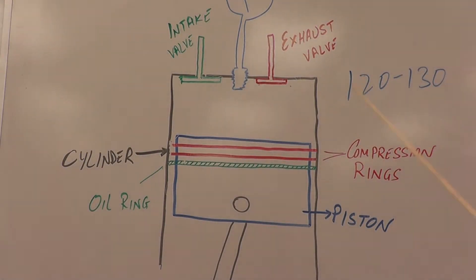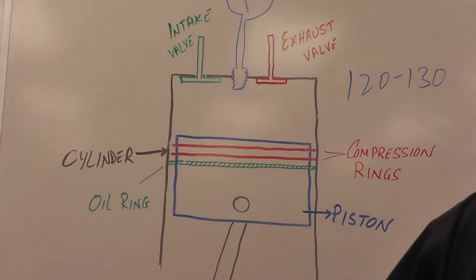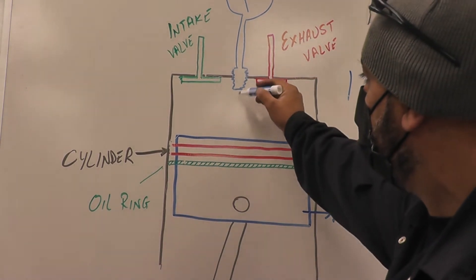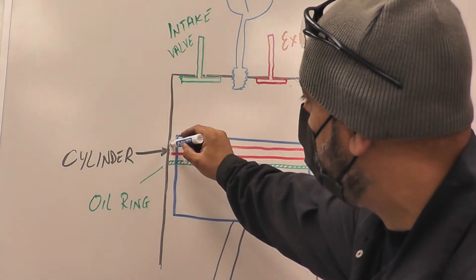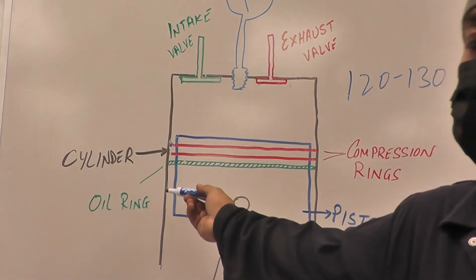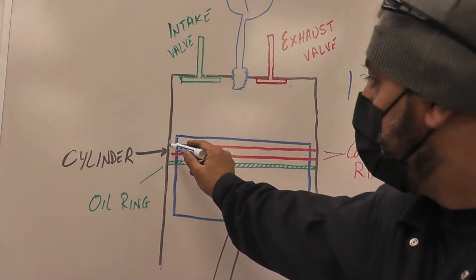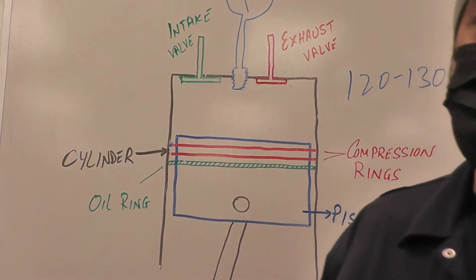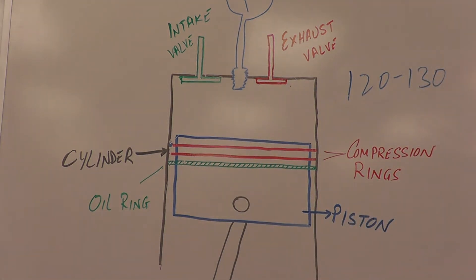So our compression on all four cylinders was 120 to 130. Obviously the compression is either leaking from the valves or it's leaking from the rings. We need to figure that out. So what we do is we take the gauge out, we put some oil, about one tablespoon of motor oil, 10W-30, any motor oil. You put the oil in, and what the oil is going to do is the oil is going to go sit around the rings.